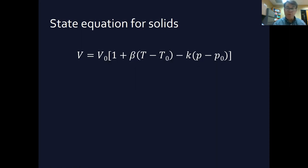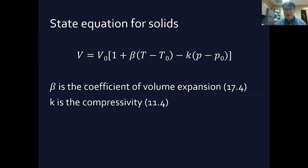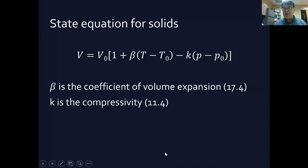So there you have it — the state equation for solids rounds out this involved section. β is the coefficient of volume expansion and κ is the compressibility constant. There's a lot covered here — essentially several chapters of chemistry condensed into one video. On to the next section of Chapter 18 of Young and Friedman's University Physics.